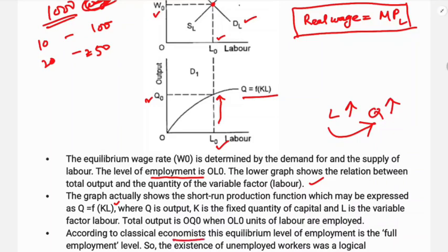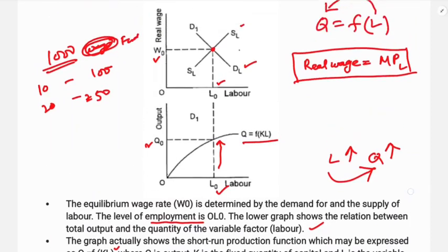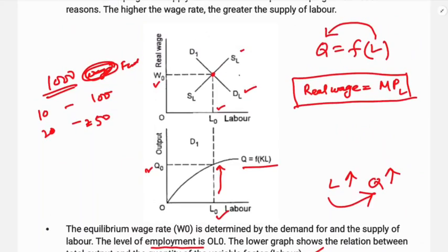According to the classical economists, this equilibrium level of employment is the full employment level. The existence of unemployed workers was a logical impossibility. So the equilibrium is the full employment level of equilibrium. When unemployment happens, there will be an automatic wage change to restore equilibrium.